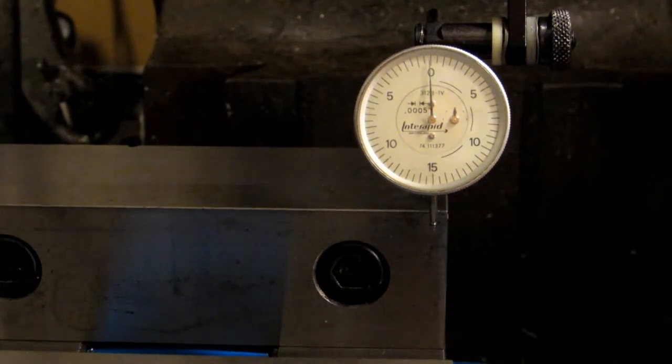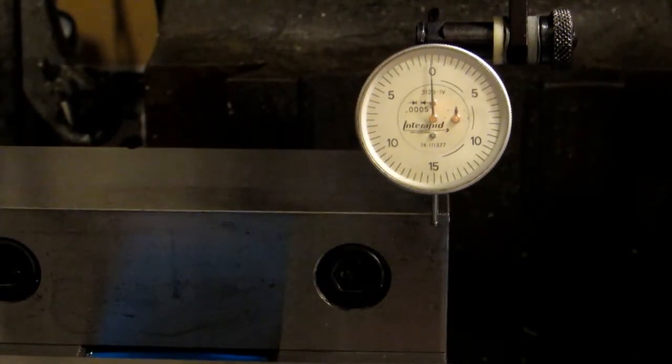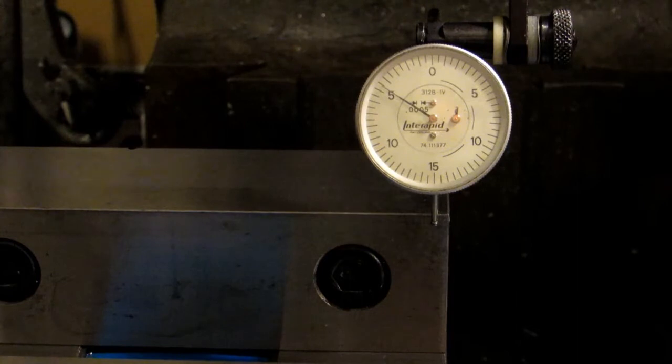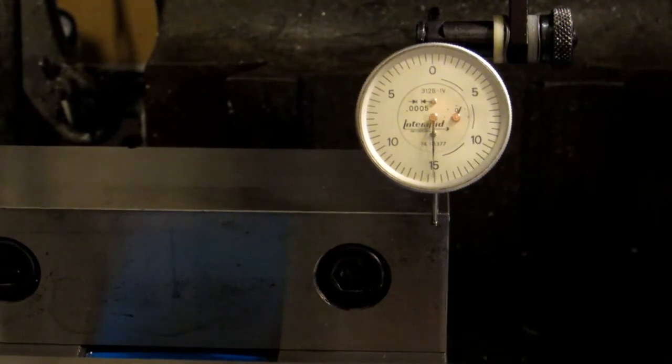I'm going to zero it on this side every single time. So I'm moving my Y axis handle in order to zero my indicator. And I'm just going to move it down to the fifteen at the bottom of the dial.